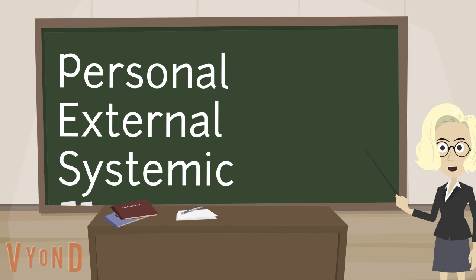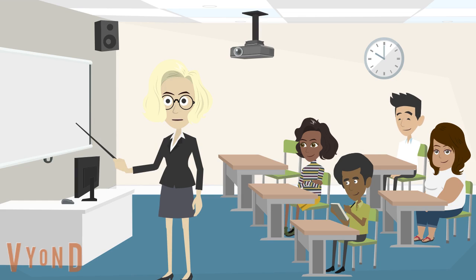What can these characters do to face these different kinds of obstacles? I'm thinking that for Barbara and Sonny to tackle their personal problems, they have a lot of options.